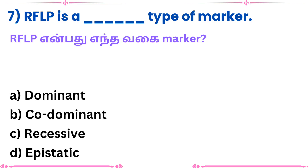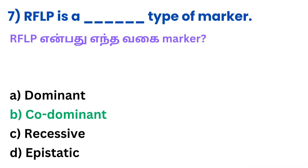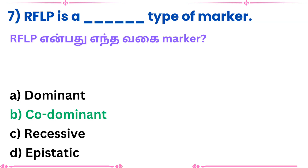Question 7: RFLP is a blank type of marker. Answer: Co-dominant.